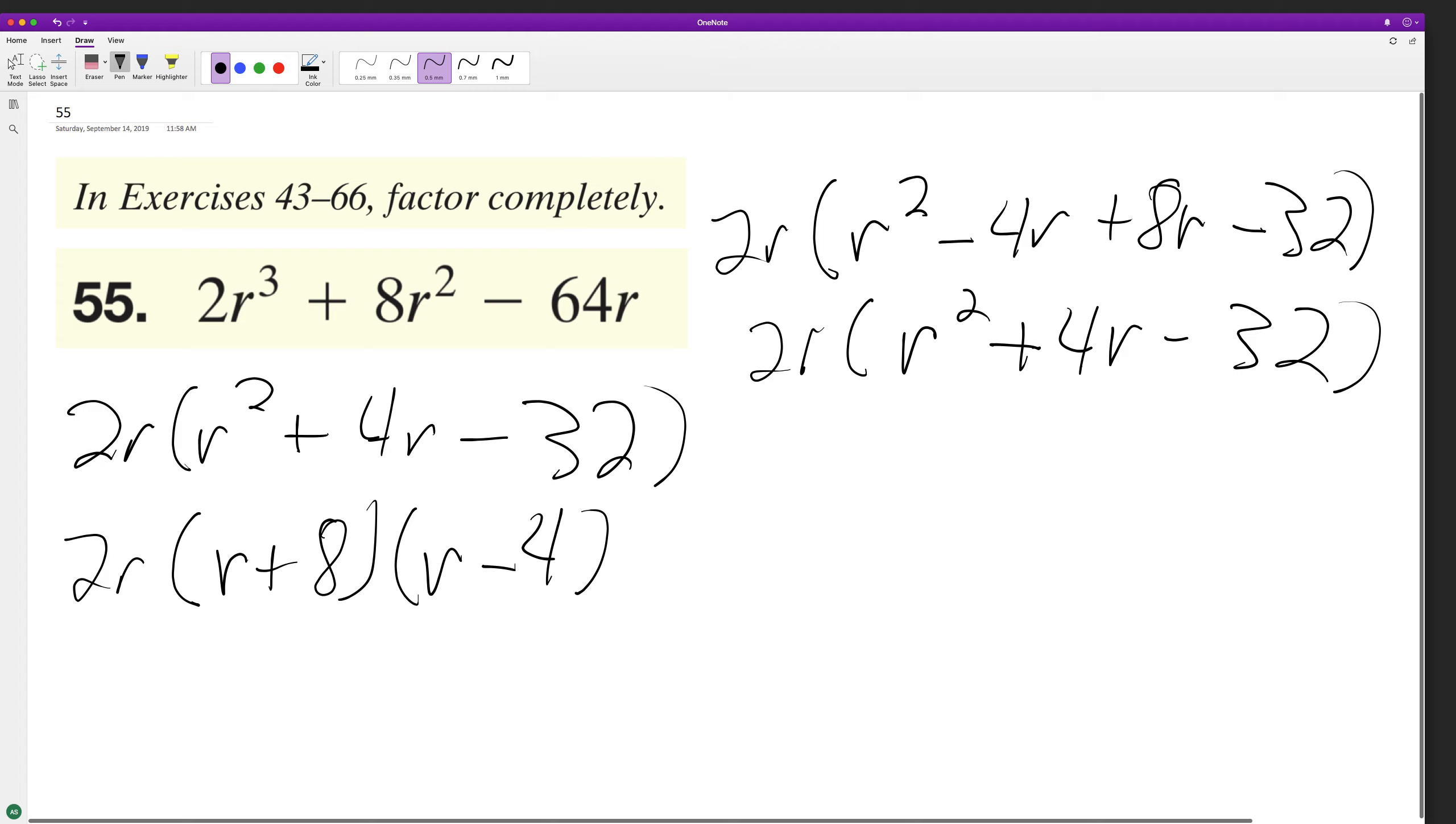All right, and then distribute the 2r: 2r³ + 8r² - 64r. That's it.